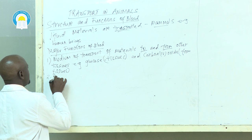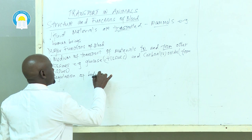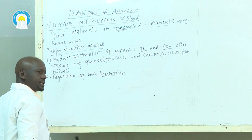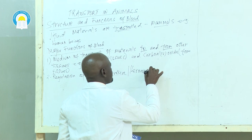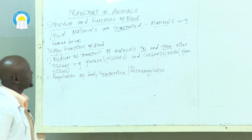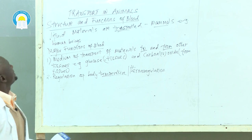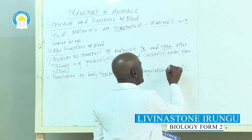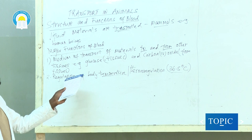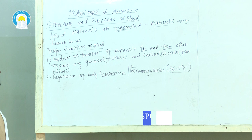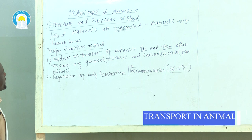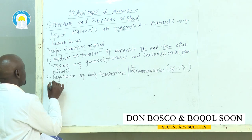The second major function of blood is regulation of body temperature, known as thermoregulation. Mammals have a constant body temperature. For example, in human beings, the normal body temperature is on average 36.5 degrees Celsius. For that temperature to remain constant, various activities take place in the body to maintain it — these will be discussed in later topics.